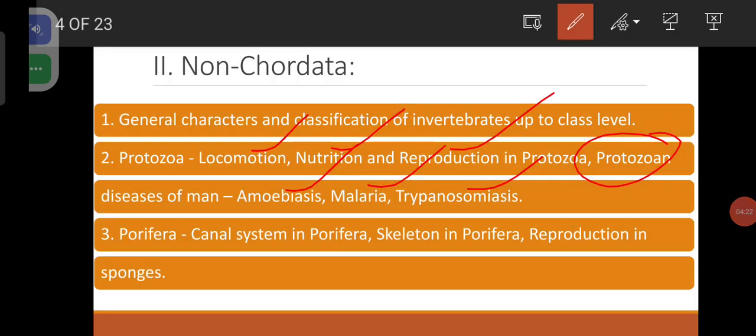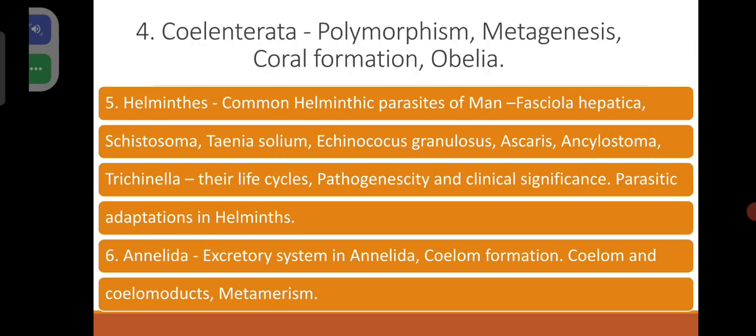Porifera: general characters, canal system, skeleton in Porifera, and reproduction in sponges. Coelenterata: polymorphism — how a number of zooids coexist in a coelenterate colony — metagenesis, which is alternation of generations, meaning alternation of polyp generation with medusa generation.